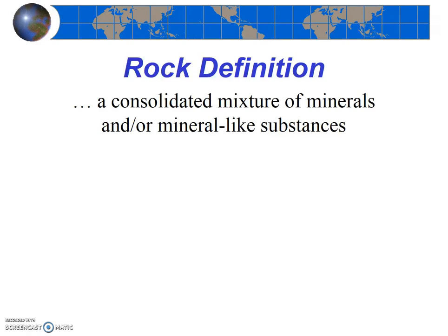Next, let's look at the definition of a rock. Rock is a much more general term than mineral. Rocks can be defined simply as a consolidated mixture of minerals and/or mineral-like substances — just a solid mass of minerals stuck together. It might even include things that aren't minerals, like organic material. We've already mentioned a few specific rock names when we discussed the composition of the crust and the mantle.